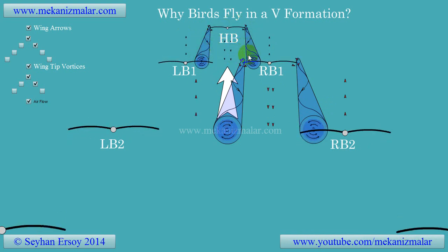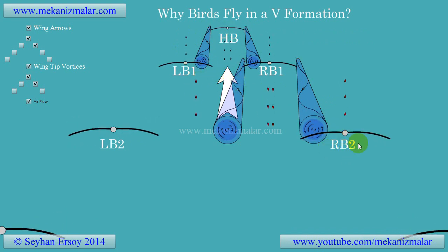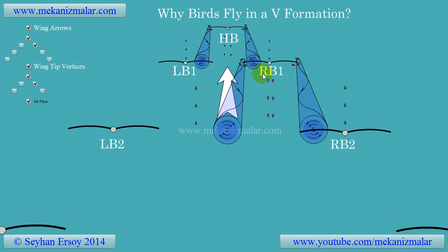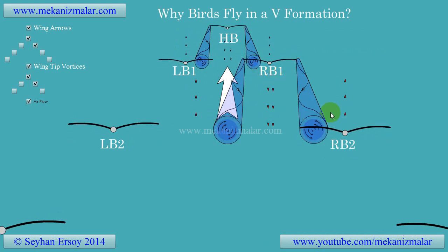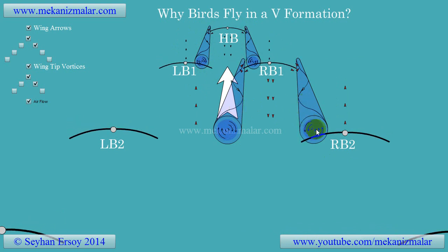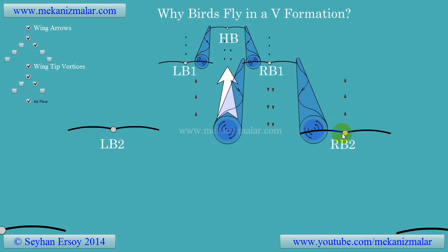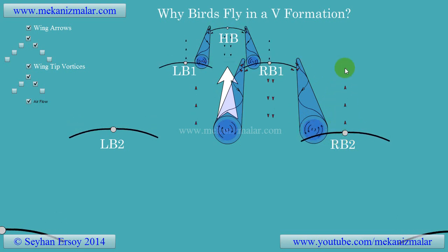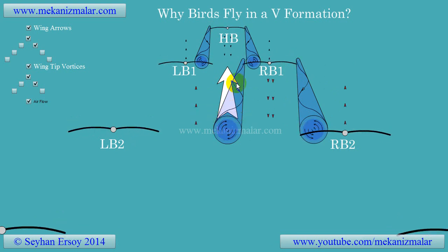So what's the best spot to fly for bird RB2, which is behind bird RB1? You may think that the left and right spots behind RB1 are the best. However, that is not the case. The only good spot for RB2 is the right side behind RB1.